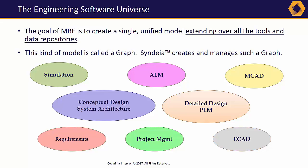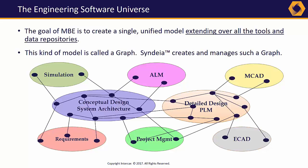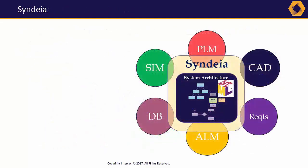Cyndia attempts to meet that challenge using the concept of a graph, with the system architecture model created in SysML modeling tools MagicDraw or Rhapsody at the center. While this is not the only possible approach, it makes a good starting point for building our graph. SysML allows requirements, structure, behavior, and analysis to interact as equals, and provides an effective high-level roadmap and clearinghouse for the system specification.